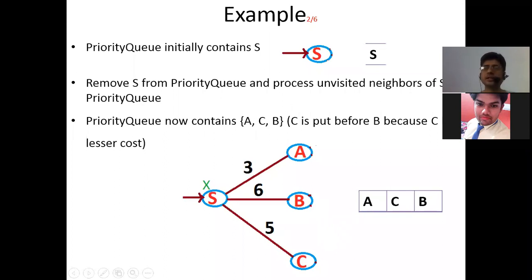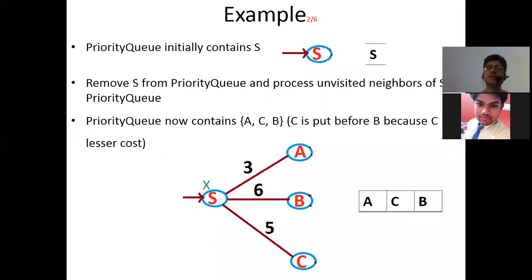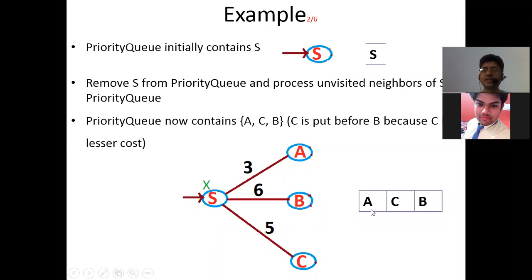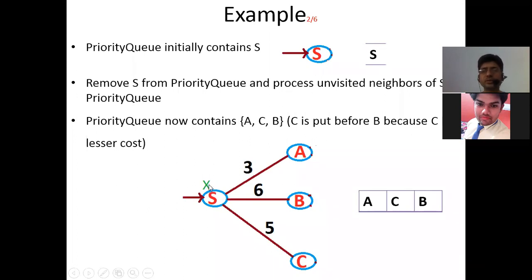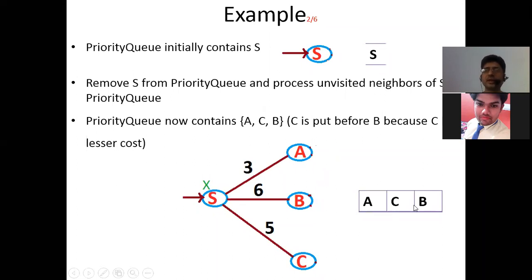Now the priority queue contains A (3), C (5), B (6). We remove A — the node with the smallest cost — and add A's unvisited neighbors E (8) and D (9) to the priority queue. The updated priority queue is now: C (5), B (6), E (8), D (9). Nodes S and A are marked as visited.